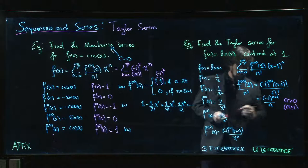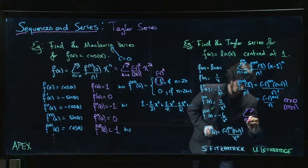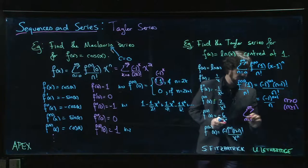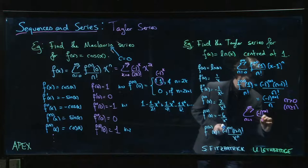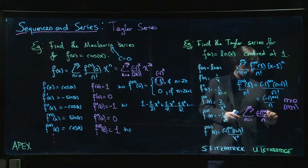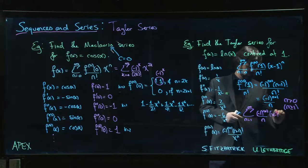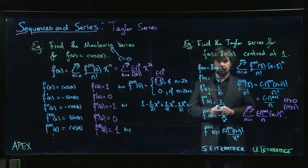And so what we get for our power series is we get this. We get the sum n going from 1 to infinity minus 1 to the n plus 1 over n times x minus 1 to the n. There we have it.